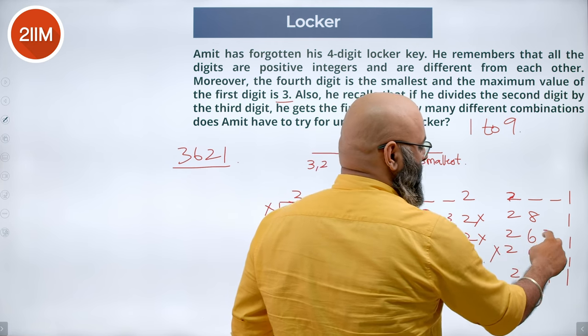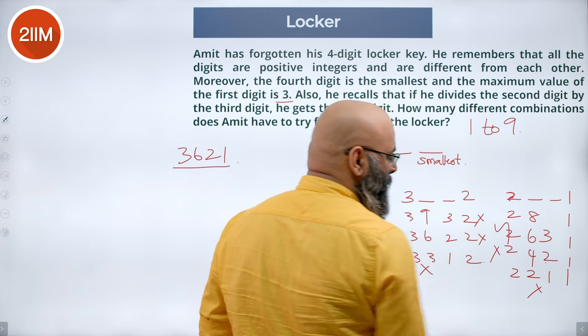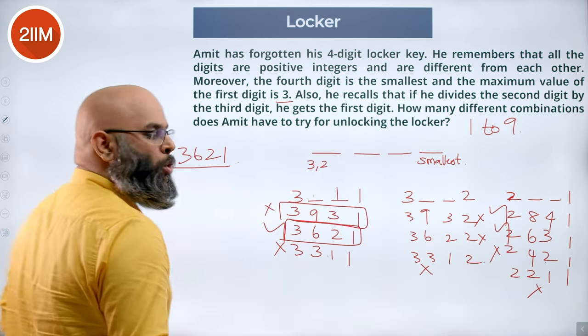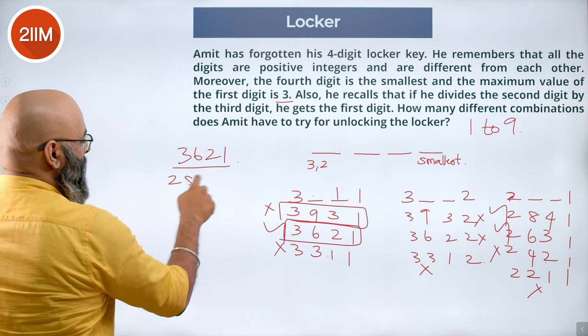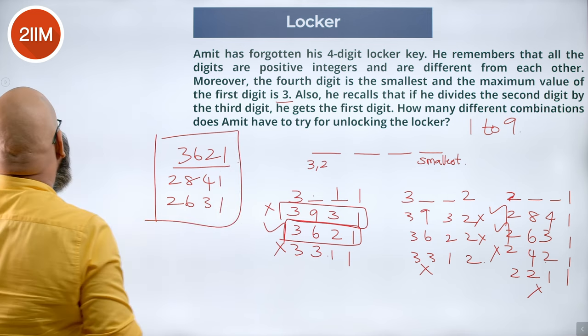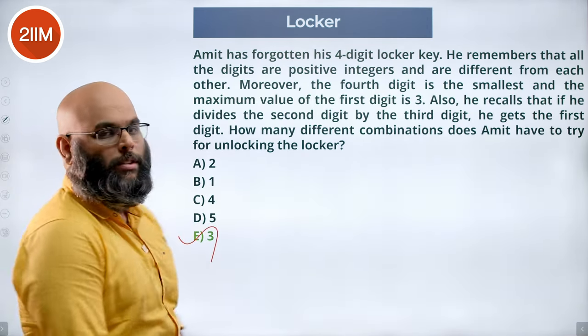In this case, 2 6, this has to be 3. 2 into 3 gives me 6. 2 6 3 1 works out well. In this case, 2 8 4 1 also works out well. We have 2 more combinations, that is 2 8 4 1, 2 6 3 1. Altogether there are 3 different combinations. The answer is 3.